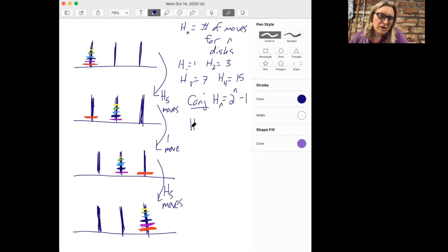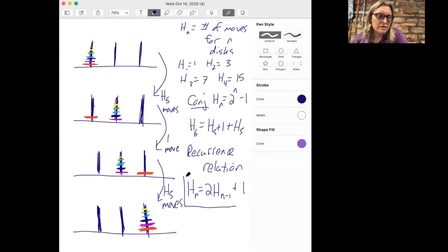So what we just drew a picture of there is that h_6 is h_5 plus 1 plus h_5. And more generally, that's an example of the recurrence relation that we have, which is that h_n is 2 times the previous value plus 1. All right, so this is our recurrence relation. And we can check that it matches with the data we have so far that if you double the previous number and add 1, you move from the number 1 to 3 to 7 to 15. So this is the recurrence relation. And our initial value is h_1 being 1.